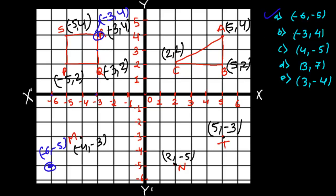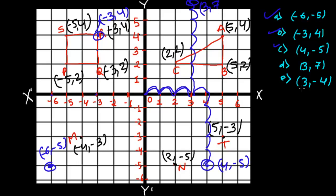Another point is four and negative five: go positive four along x — one, two, three, four — and negative five downward — one, two, three, four, five. Then negative three, seven: go to three on x and seven upward — one, two, three, four, five, six, seven — that is around here. Another point is three, minus four: go to three on x and minus four downward — one, two, three, four. This is how we locate points in coordinate geometry.